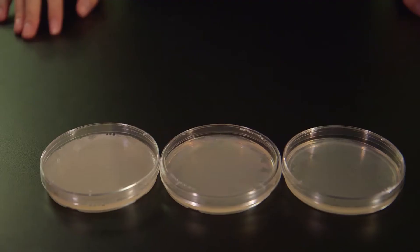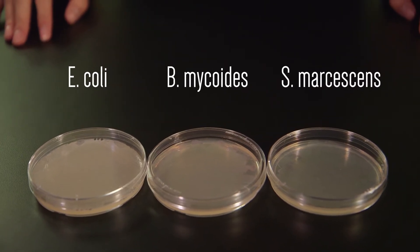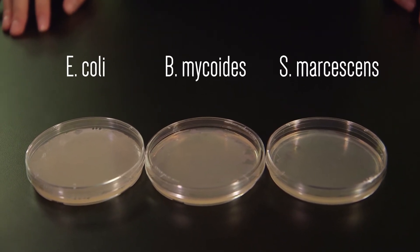Each group of two students will receive an agar plate with one of these three bacterial species: E. coli, B. mycoides, or S. marchesians, which are growing on the surface of the agar.